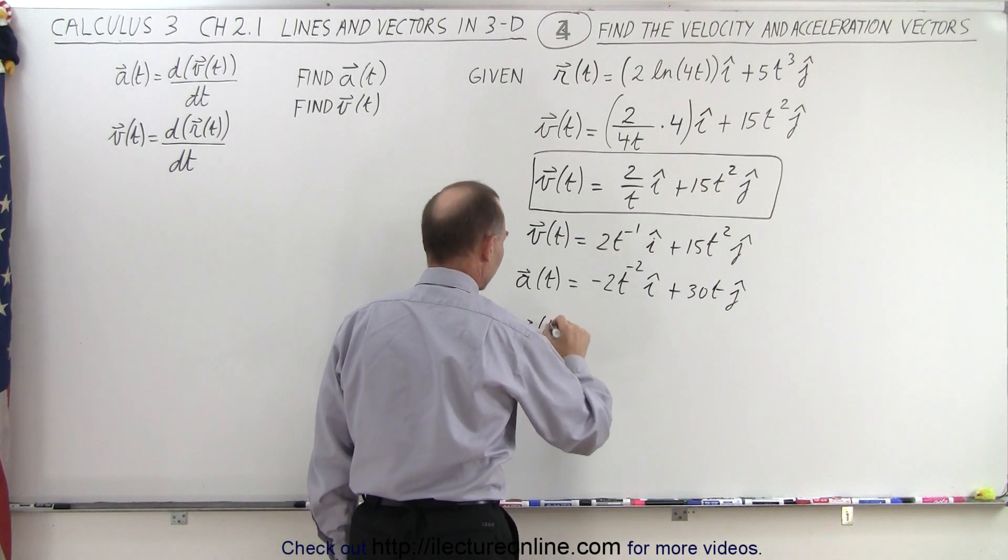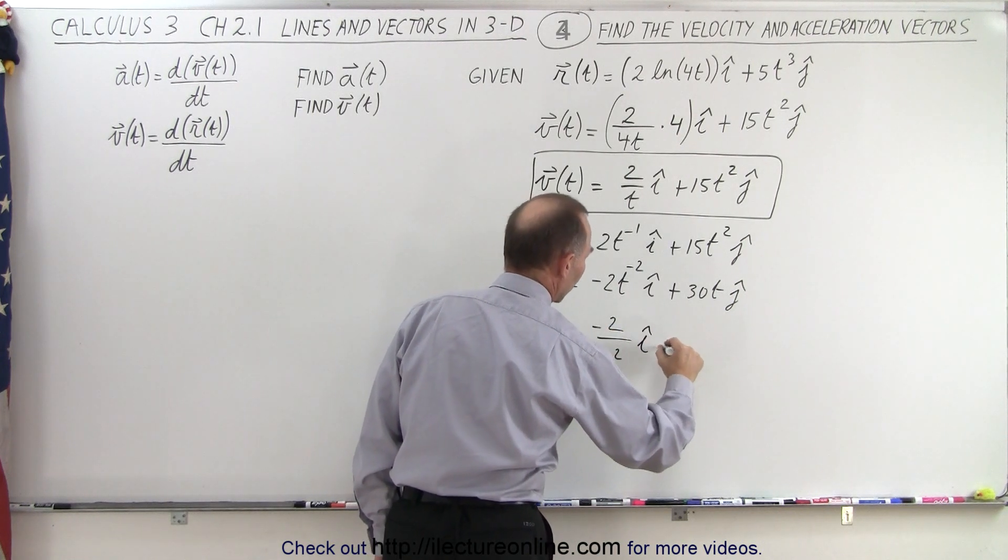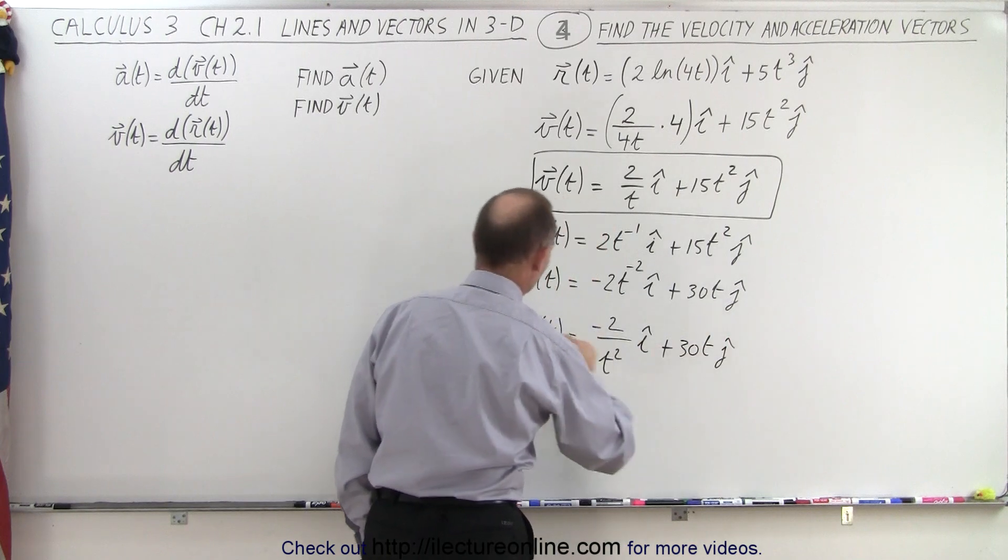So simplifying that, we get acceleration as a function of time is minus 2 over t squared in the i direction, plus 30t in the j direction.